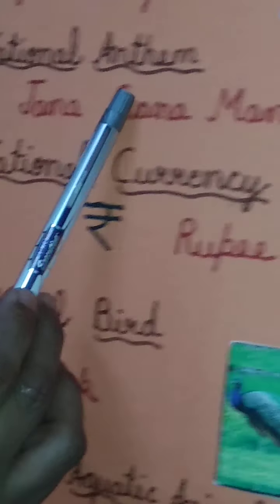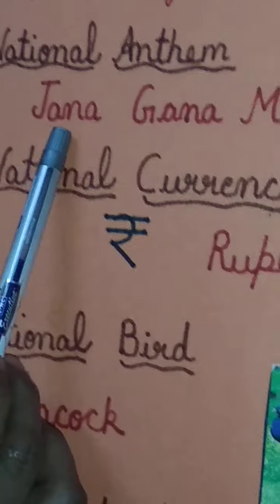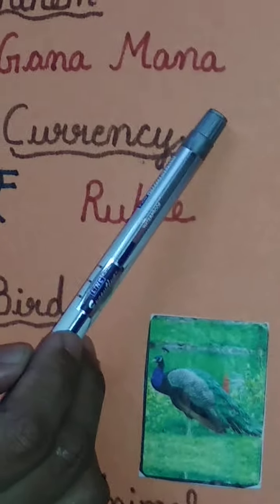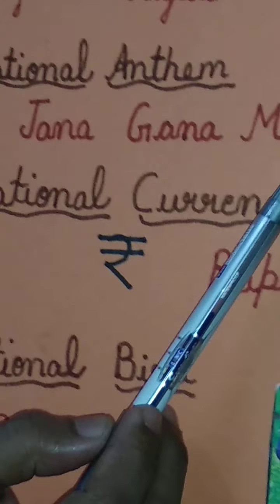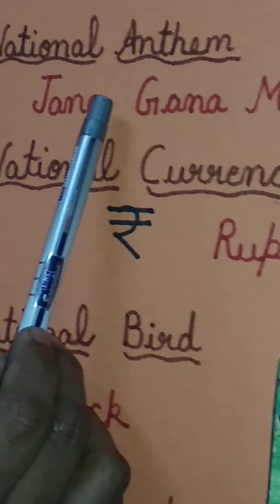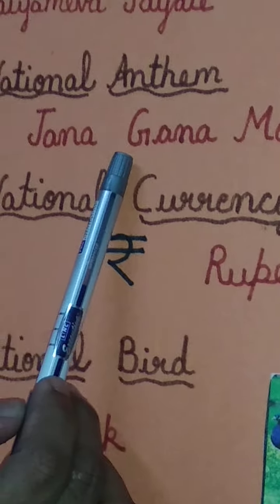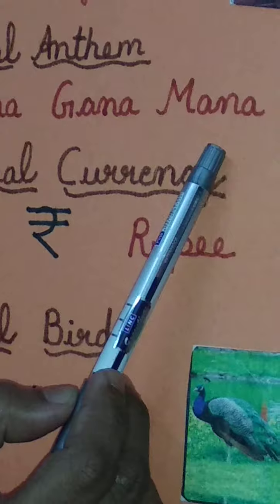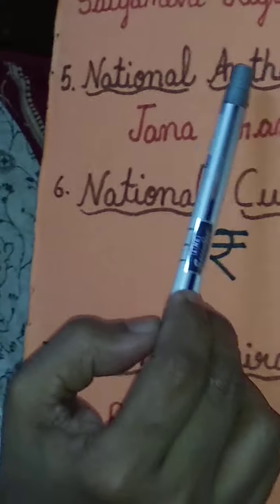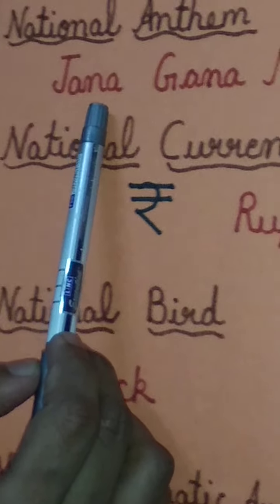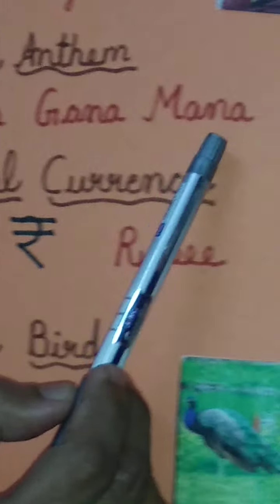The national anthem of our country is Jana Gana Mana. It is written and composed by Rabindranath Tagore. So what is the national anthem of our country? Jana Gana Mana.